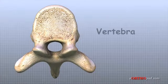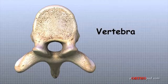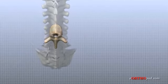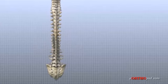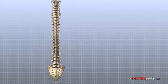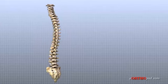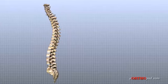The human spine is made up of 24 spinal bones called vertebrae. The vertebrae are stacked on top of one another to create the spinal column, which gives the body its main upright support.